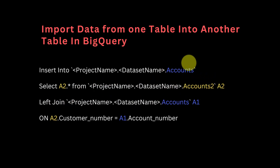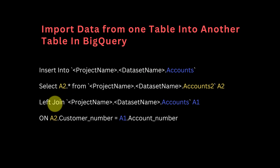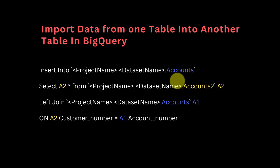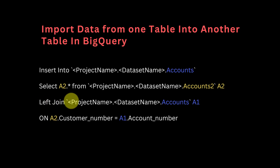You're importing everything from the 'accounts2' table, and then you do a LEFT JOIN on the accounts table. This is the main table which you want to import data into. The reason you do the LEFT JOIN is you want only the data values which don't already exist in the accounts table to be inserted, so you don't want to create duplication — that's why we're using a LEFT JOIN as opposed to a RIGHT JOIN or an INNER JOIN.